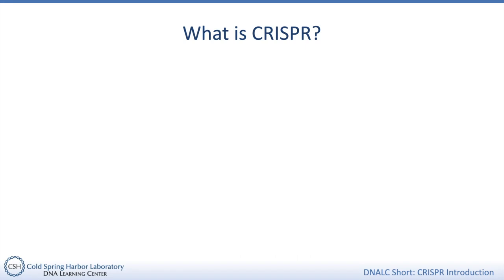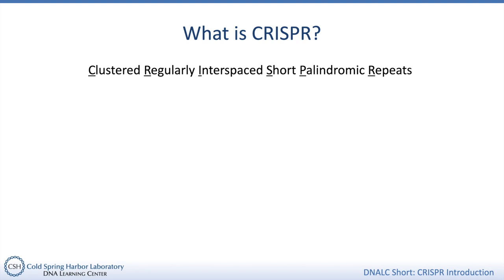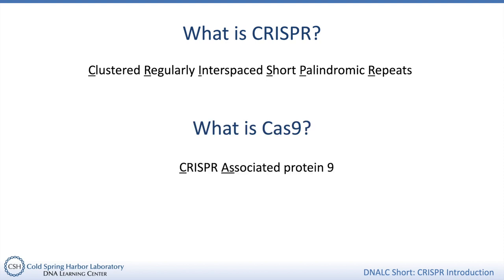So first of all, what is CRISPR? CRISPR is an acronym that stands for Clustered Regularly Interspaced Short Palindromic Repeats. Usually when people say CRISPR though, they're talking about a CRISPR-Cas system, not just those palindromic repeats. Cas9 stands for CRISPR-Associated Protein 9. Cas9 is a protein and more specifically an endonuclease, a type of enzyme that cleaves or cuts the backbone of DNA somewhere in the middle of a chain. Cas9's main job is to cut DNA, originally as part of a bacterial immune system, but scientists have adapted this system to edit genomes.